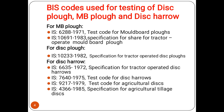The BIS is the Bureau of Indian Standards codes used for testing of disk plow, MB plow, and disk harrow. For MB plow, the codes used are IS 6288 and IS 10691 — specification of the share and detector of the MB plow. For disk plow, the code is IS 10223 — specification of tech. Codes IS 6635, IS 16409, IS 217, and IS 4366 are used for the disk harrow.